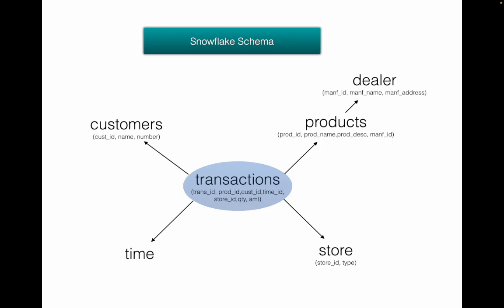Similarly, you could normalize the customer table by moving the customer's address information into a separate table — the customer ID in the customers table acts as the primary key, and the customer ID in the address table acts as the foreign key. You can also break the store table into two or more tables in the same way.